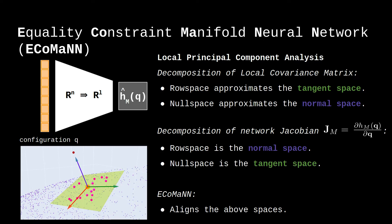ECOMAN works by using local PCA to align the row space of the data covariance matrix with the null space of the network Jacobian, which must be equivalent to the tangent space of the true underlying manifold, and the null space of the data covariance matrix with the row space of the network Jacobian, which must be equivalent to the normal space of the true underlying manifold.